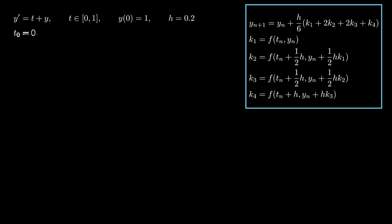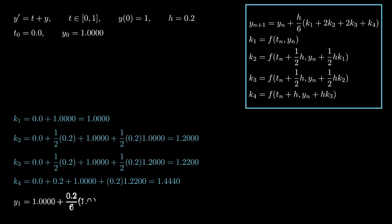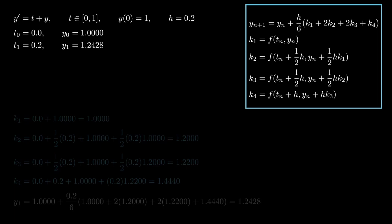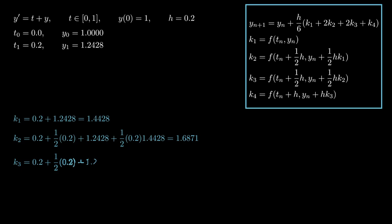The initial values of t_0 and y_0 are 0 and 1 respectively as specified in the initial value problem. These, along with h, are substituted in the expressions for k_1 to k_4, which are then in turn used to calculate y_1. The value of t_1 is simply t_0 plus h. The new values of y_1 and t_1 are then used to calculate y_2 and t_2, and so on until y_5 and t_5.